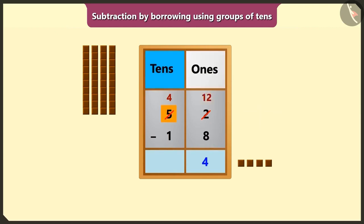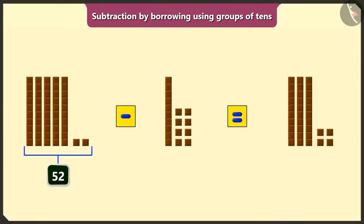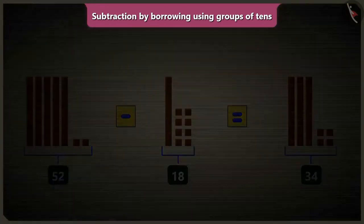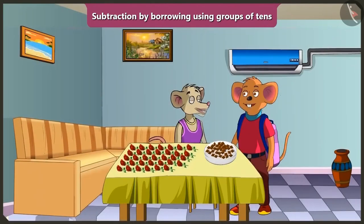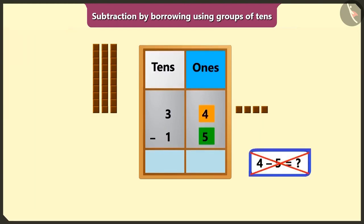Now we have to subtract the numbers of the tens place. If we subtract 1 ten from 4 tens we will get 3 tens. So we will write 3 in the place of tens. So this way, after eating 18 chocolates from 52 chocolates, we would have 34 chocolates left. Now, 34 means 3 tens and 4 ones.